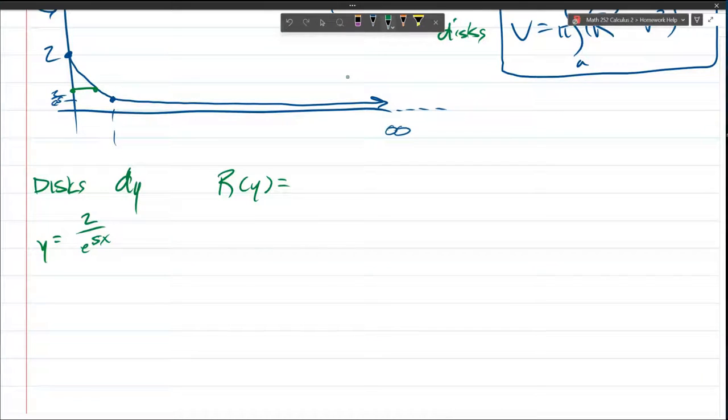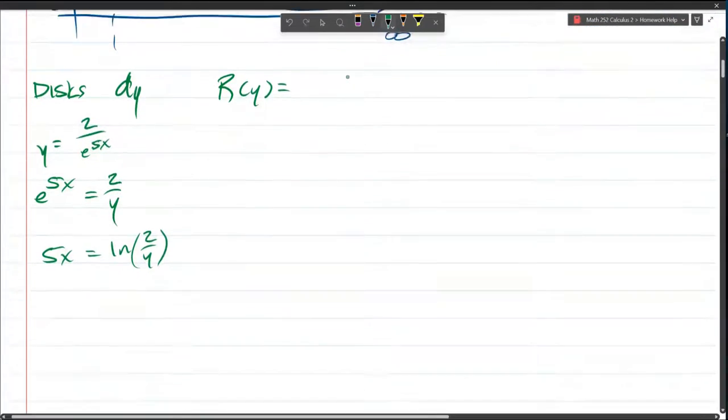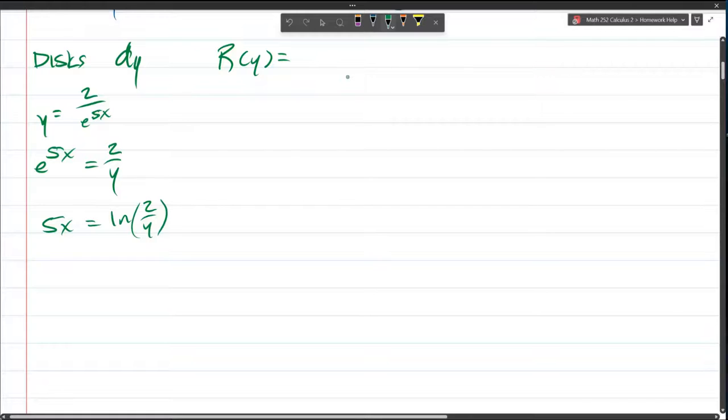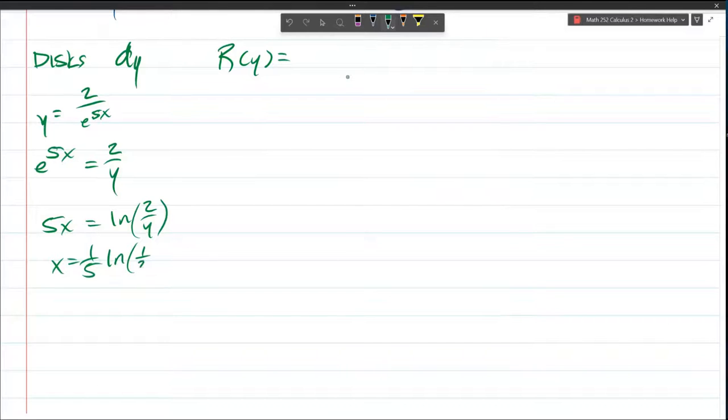And multiply by e to the 5x and divide by y. And now I want to solve for x. So I take the natural log of both sides. It'll cancel the e to the 5x and just be 5x equals ln of 2 over y. And divide by 5, x is 1 fifth ln, I could write it as 2 times 1 over y.